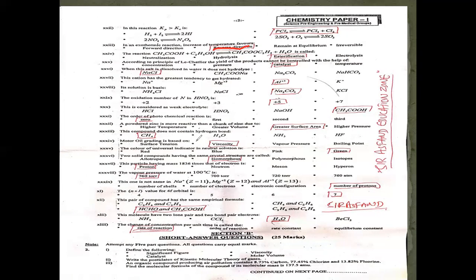The mass of a proton is 1836 times the mass of an electron. The particle whose mass is 1836 times the electron is a proton.